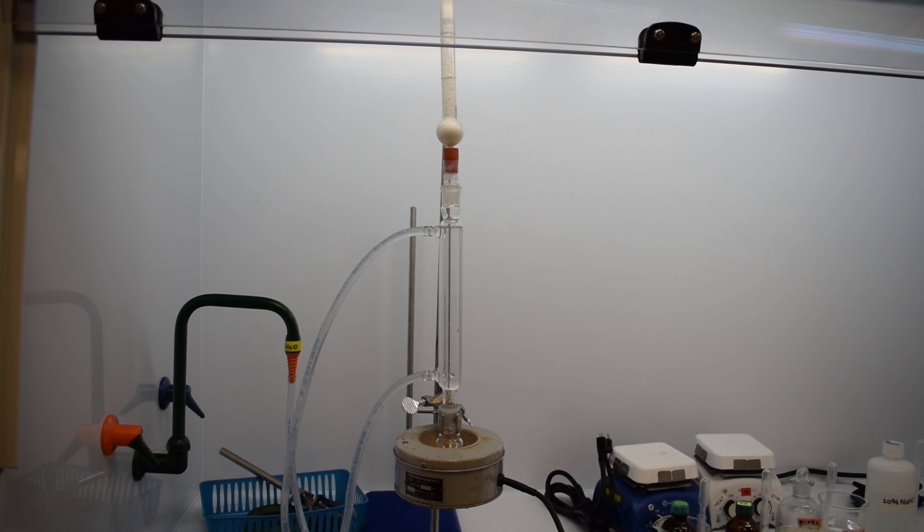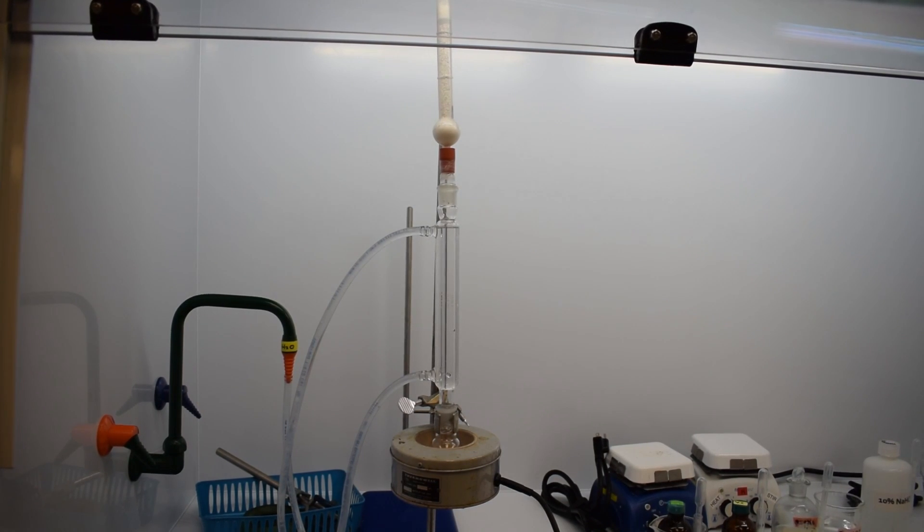This consists of the heating mantle on the bottom, the round bottom flask, a reflux condenser, and calcium sulfate drying tube on the top.